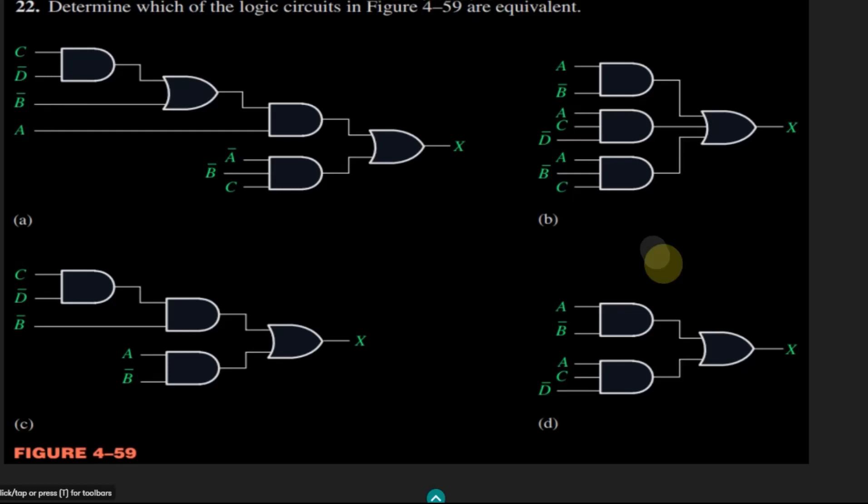Welcome back. This is question 22 of our book, and here we have to determine which of the logic circuits in figure 4.59 are equivalent. We have different parts: part A, part B, part C, and part D. Our strategy will be to find the boolean expression for each logic circuit, simplify if needed, and then see which of them are equivalent.